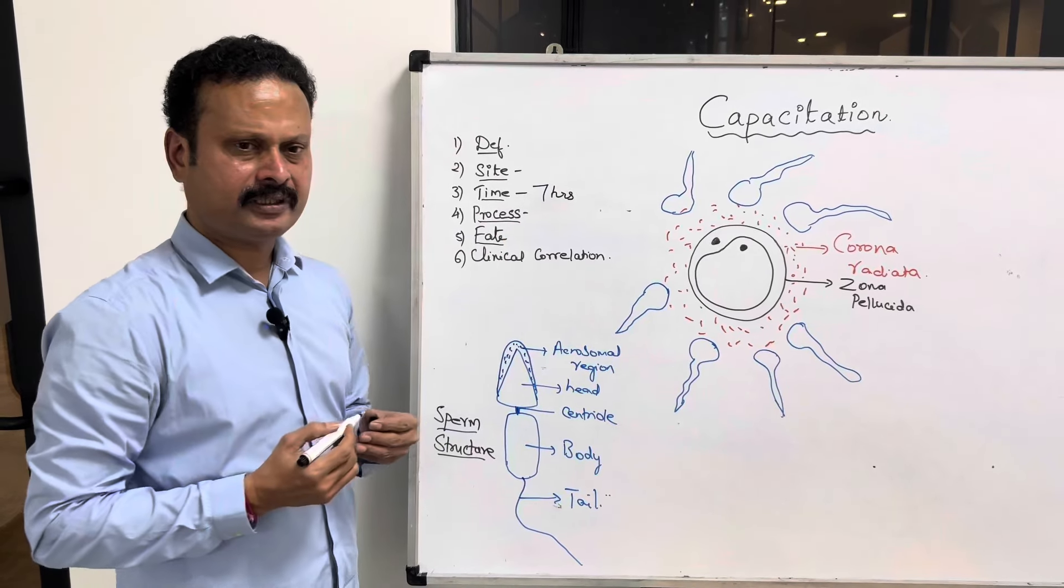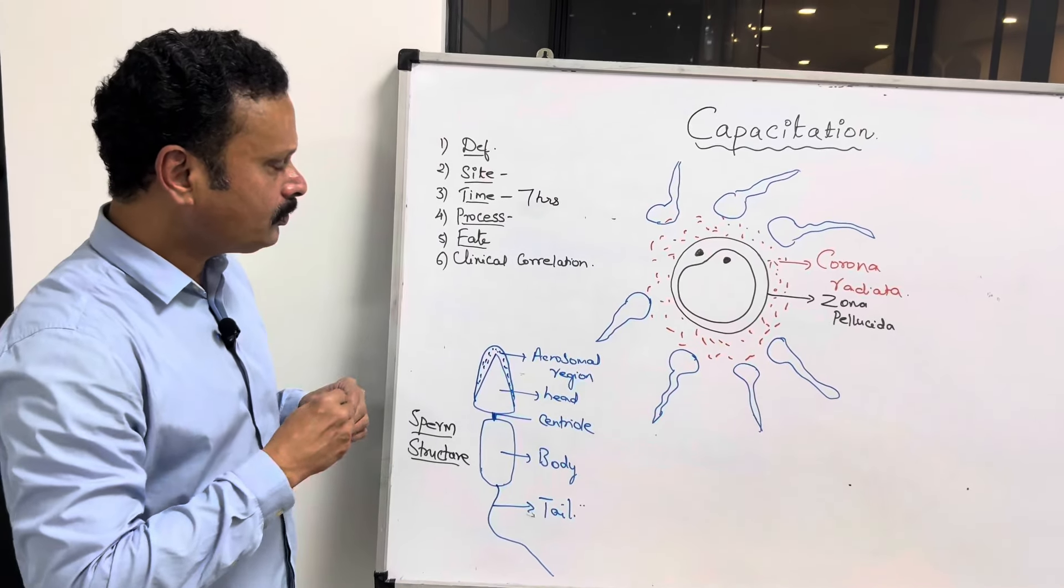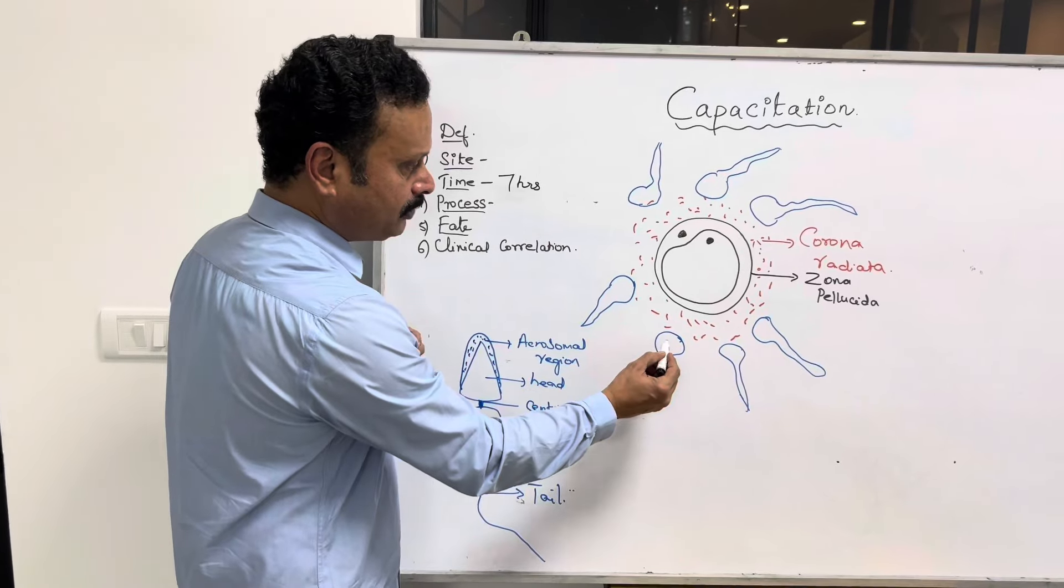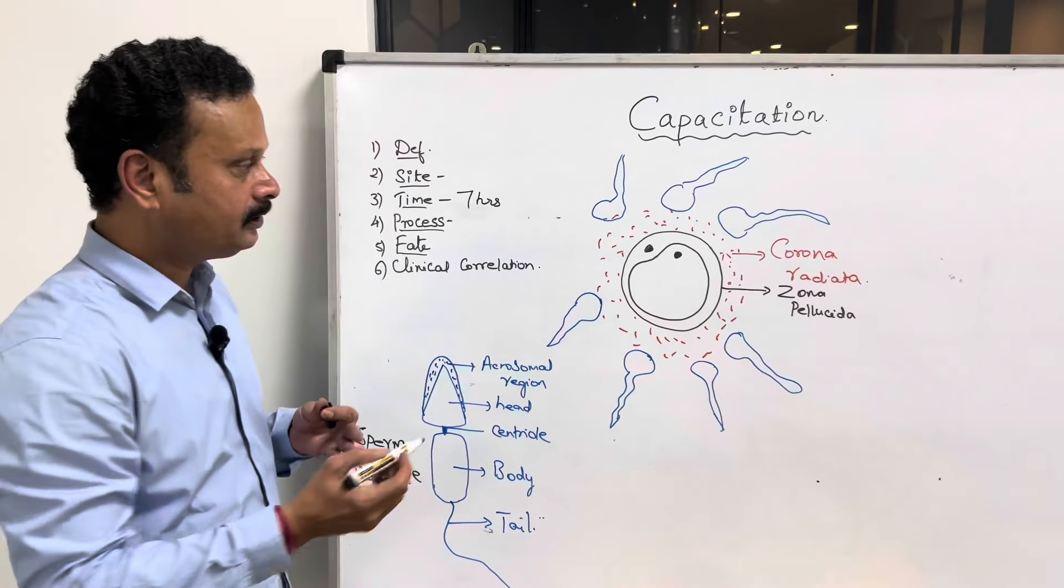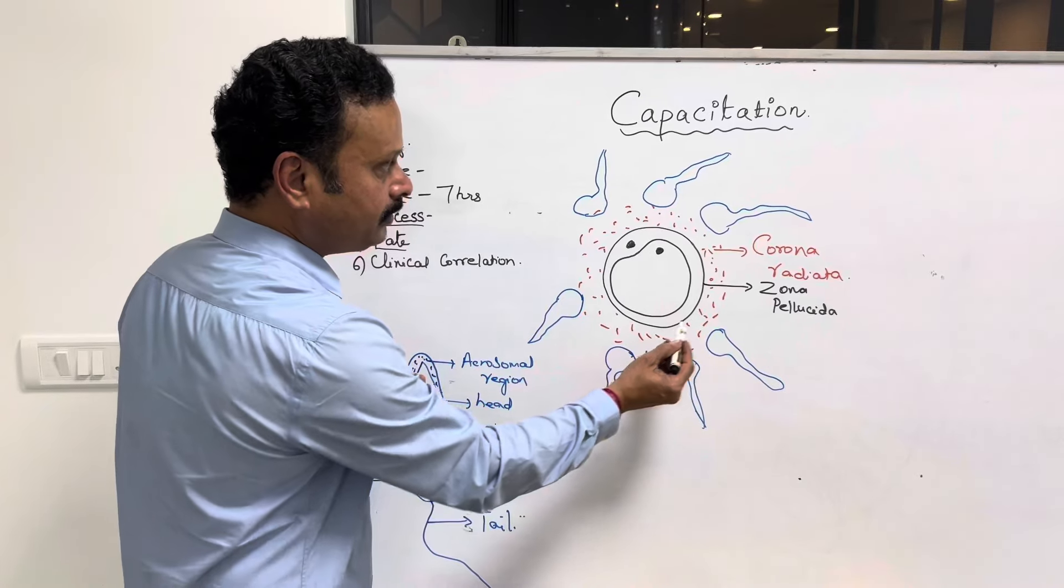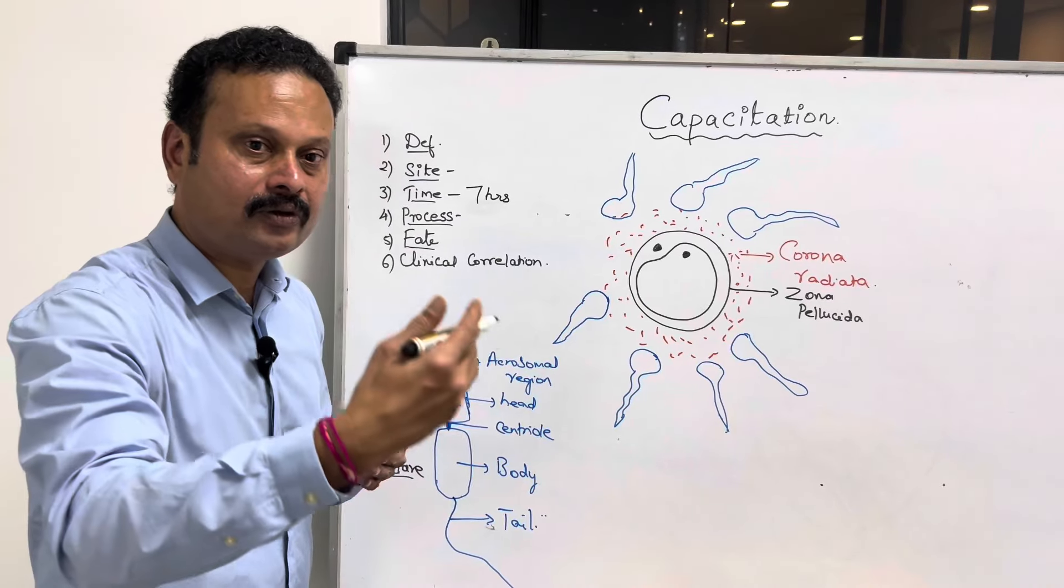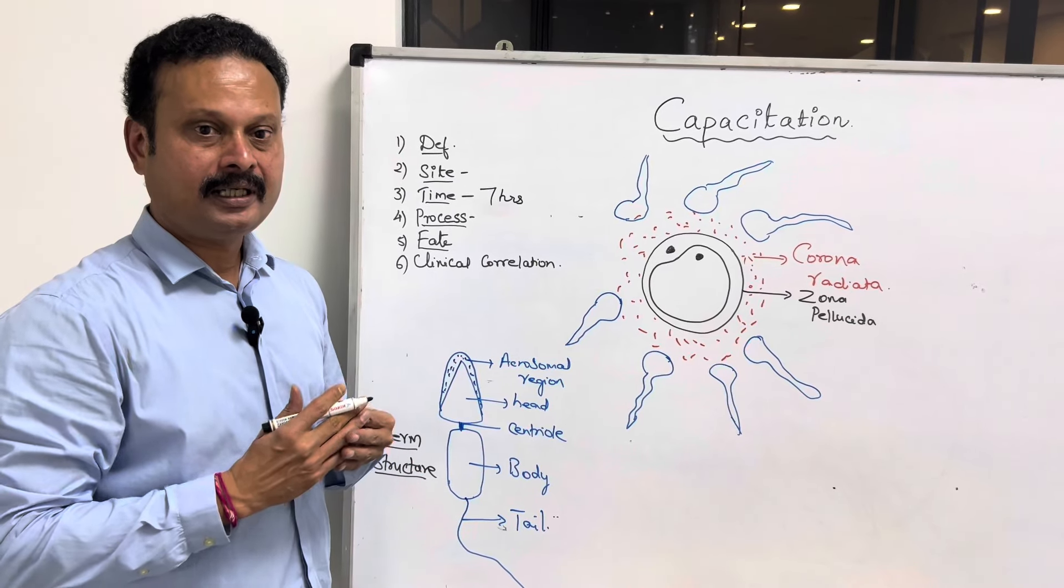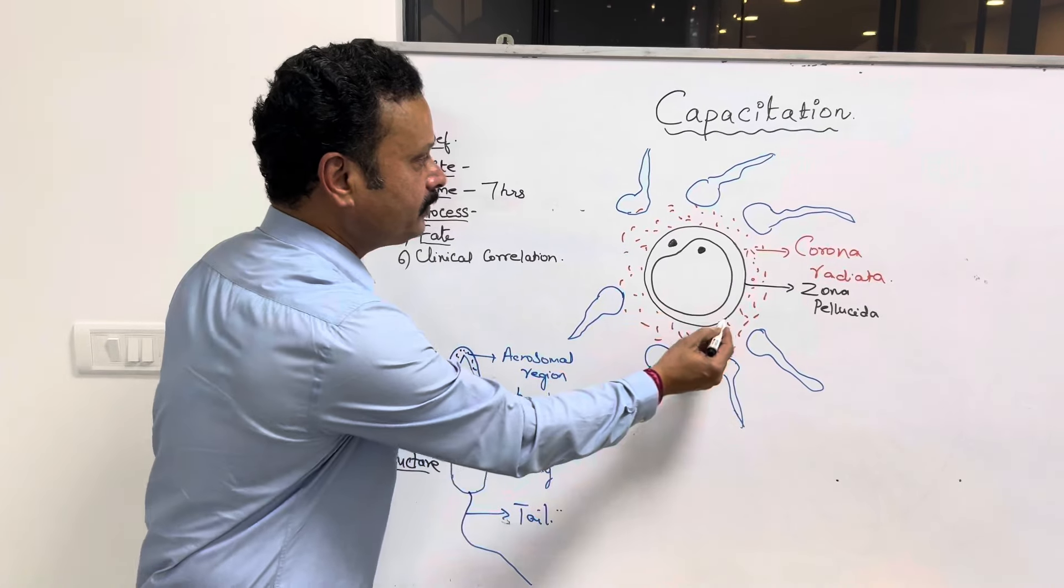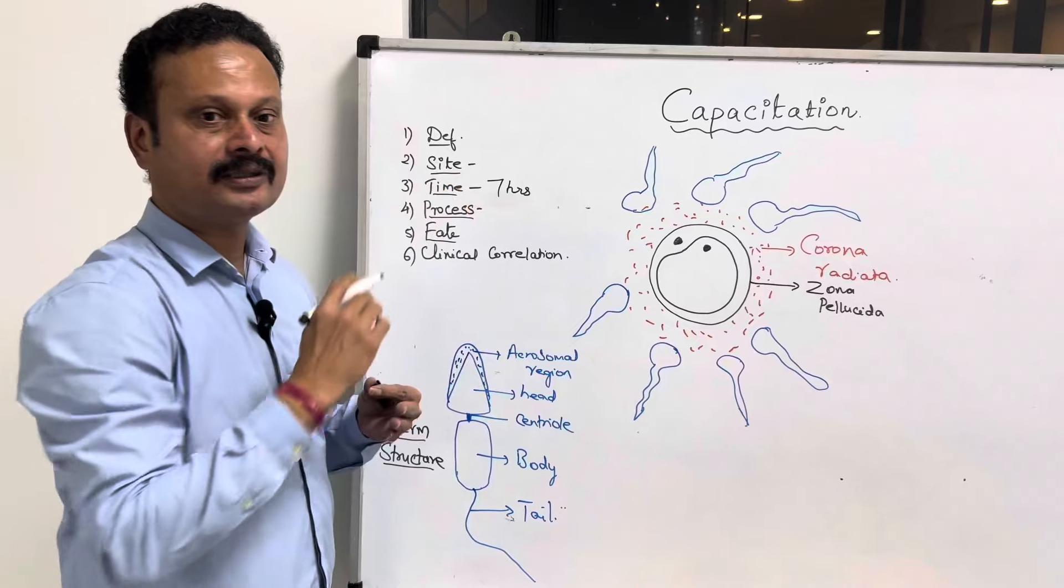Fate: what is the fate? Only these sperms which undergo capacitation can penetrate the corona radiata cells, undergo acrosome reaction, and then dissolve the zona pellucida surrounding the ovum.